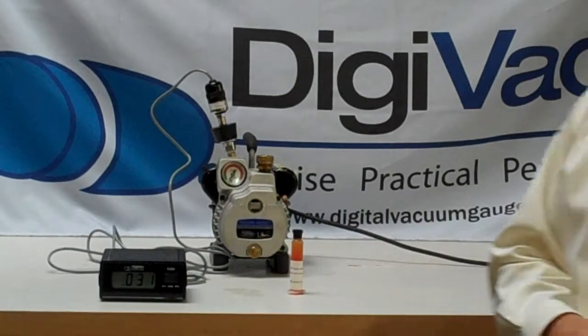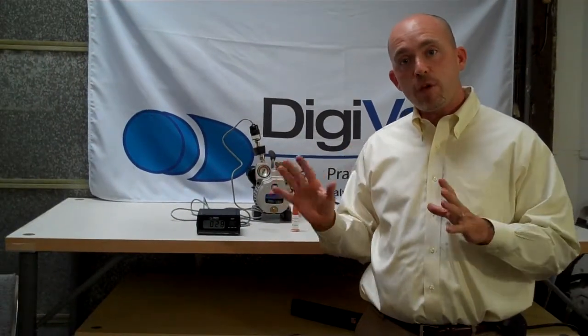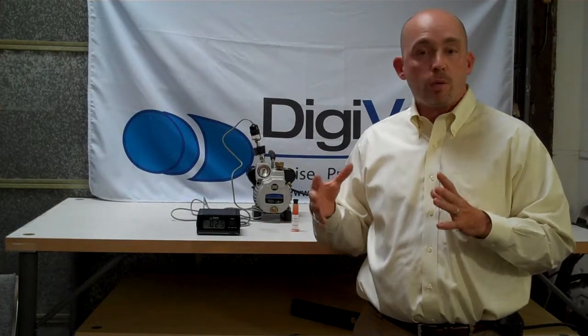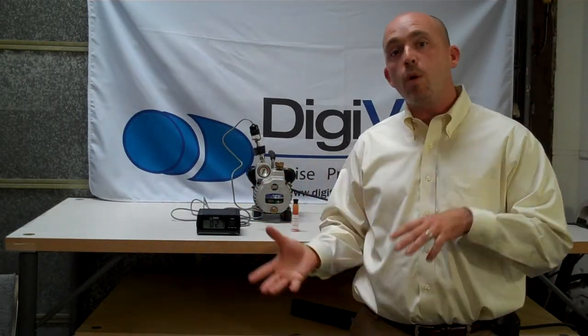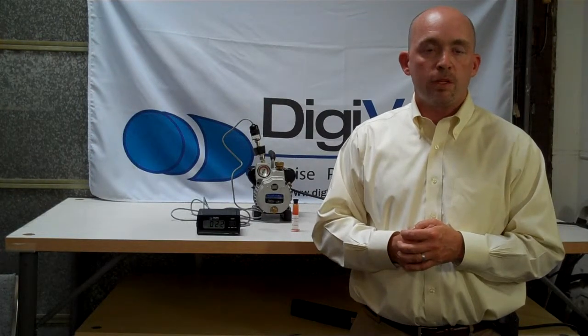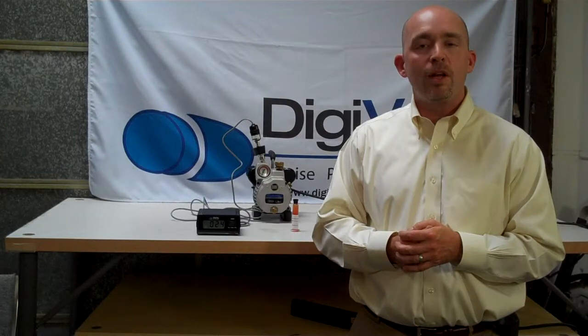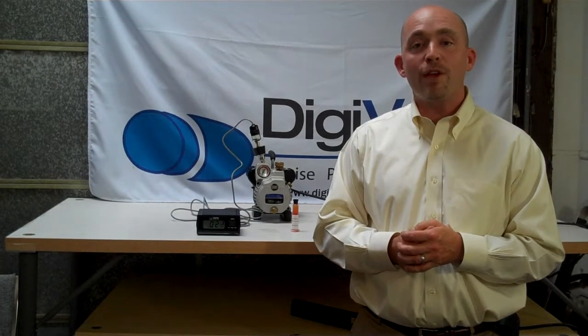What this also tells us is that if we remove all of our fittings and test the vacuum pump itself, we know that the vacuum pump is good, and that if we're experiencing leaks, we want to go check all of our other fittings and tubes and such. This is a very simple way to test a vacuum pump with the HVAC model 100V.